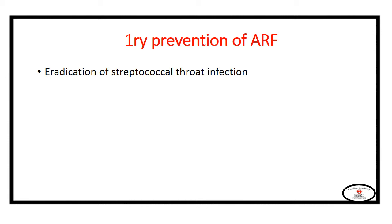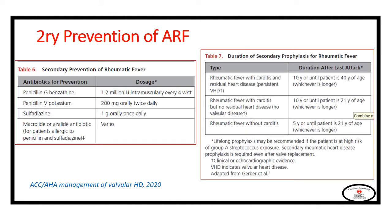For primary prevention of acute rheumatic fever — meaning prevention before it occurs — you should eradicate streptococcal throat infection. For secondary prevention, patients may use penicillin G at a dose of 1.2 million units intramuscular every four weeks. In individuals at high risk, the frequency should be every three weeks. For those intolerant to intramuscular injections, they may use oral penicillin V at a dose of 200 mg twice daily. For individuals allergic to penicillin, they may use sulfadiazine or macrolide antibiotics.